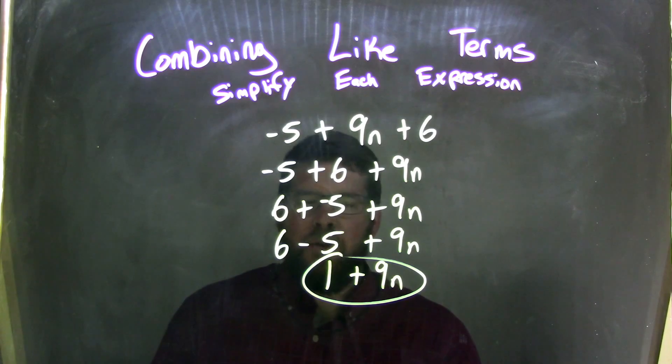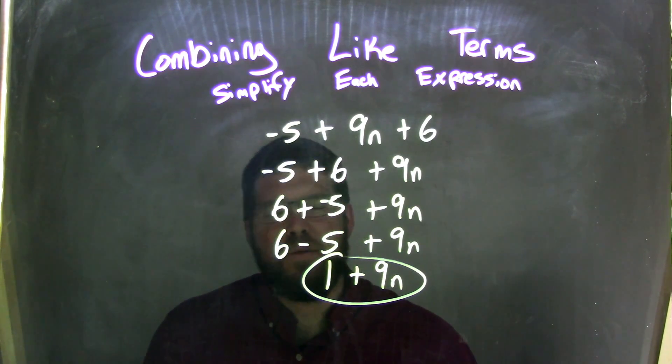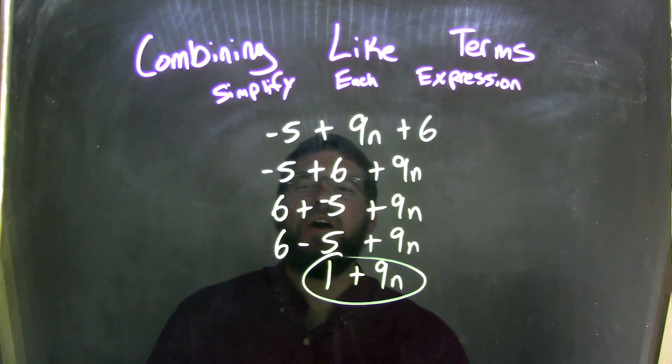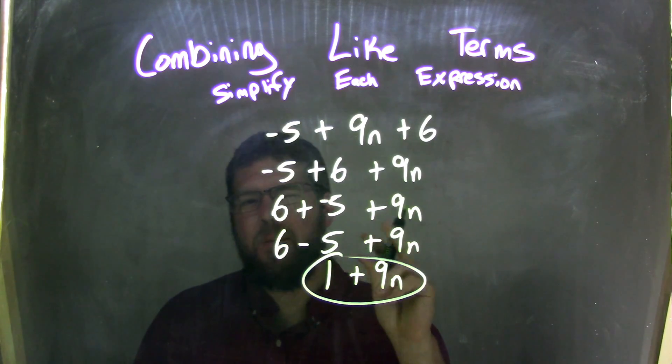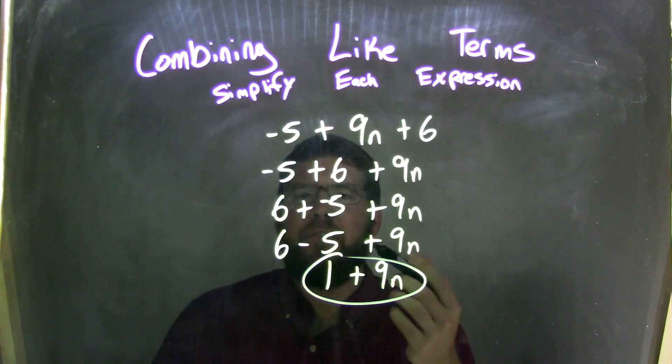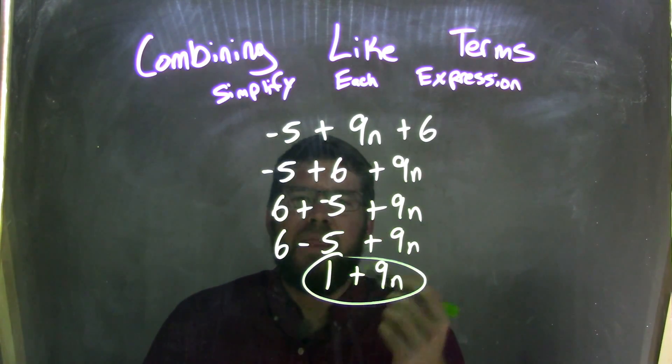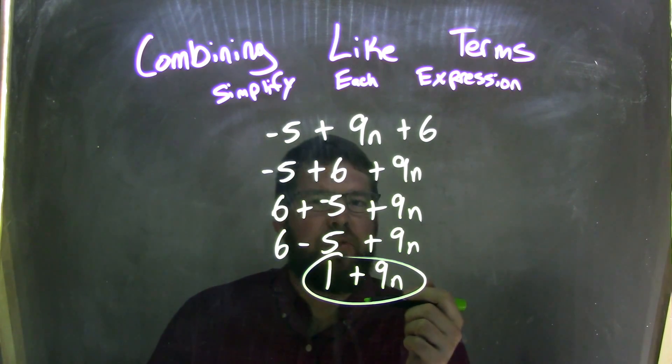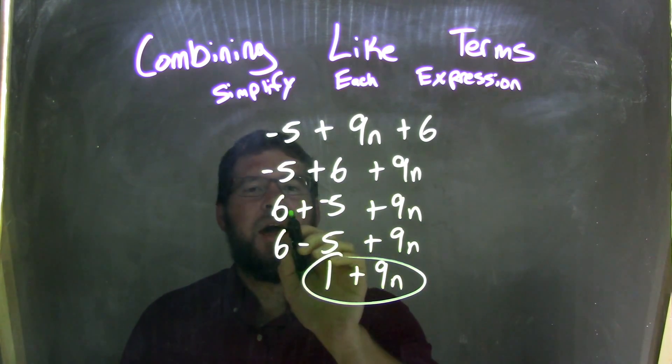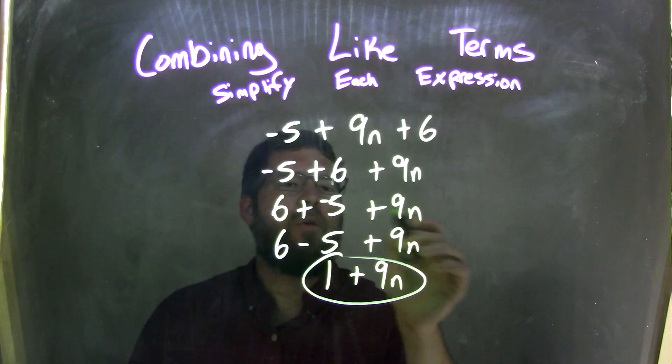And so, at this point, if you're comfortable with negatives and adding, we can see that they're really kind of one apart if they're positive. And so, negative 5 plus 6 should give me a positive 1. But, if you struggle with that, that's okay. I use the commutative property again to write it as 6 plus a negative 5 plus 9n.